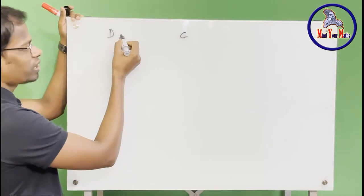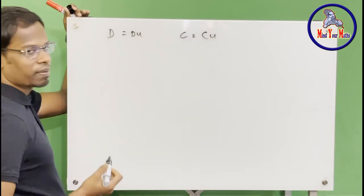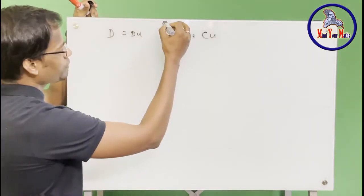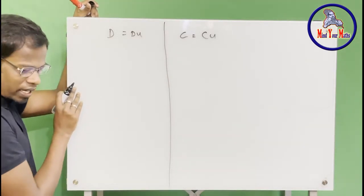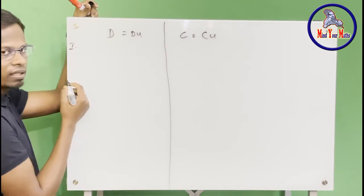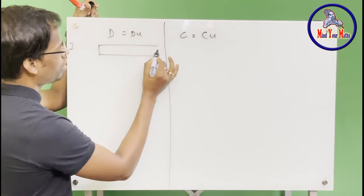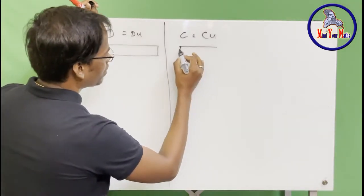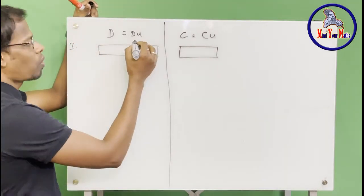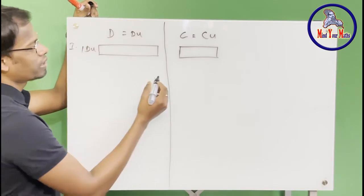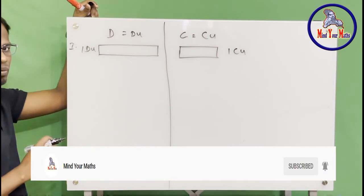For ducks we will use a duck unit, and for chicken we will use a chicken unit. As per the problem, initially there were some ducks and some chickens — we don't know how many, that's what we are going to find. Let's take the ducks as one duck unit and the chickens as one chicken unit.